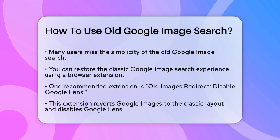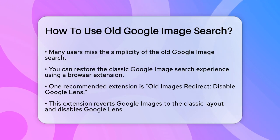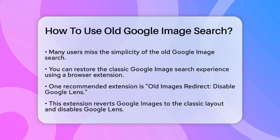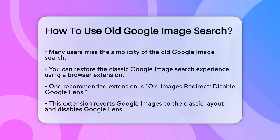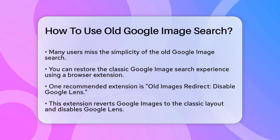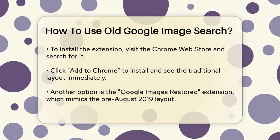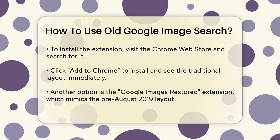First, you need to use a browser extension. There are a couple of extensions available that can help you achieve this. One popular option is the Old Images Redirect Disable Google Lens extension. This extension reverts Google Images to its classic layout and disables the Google Lens feature, giving you a straightforward and uncomplicated search interface.